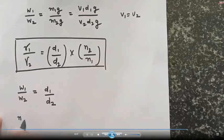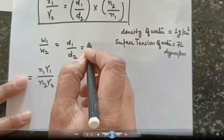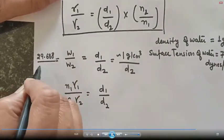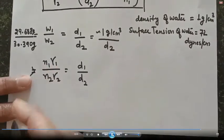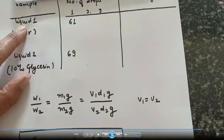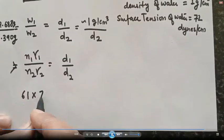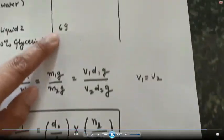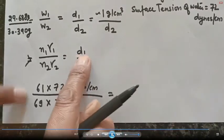We will now solve for density using these weights. The density of water is a standard value — 0.997 g/cm³, but we roughly take it as 1 g/cm³. You can calculate d₂ first, or simply put W₁/W₂ directly into the formula. n₁ is 61 for liquid one. The surface tension for water (γ₁) at 25°C is 72 mN/m (at 20°C it is 72.8). n₂ is 69.